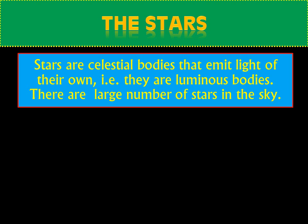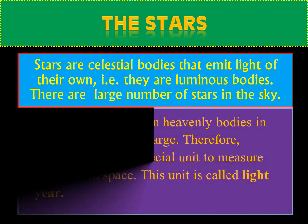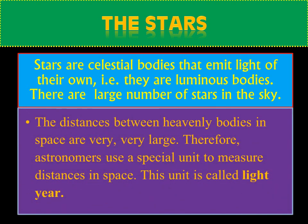We can see a large number of stars in the night sky — that means it is countless. What about the distance of these stars from the Earth? The distances between heavenly bodies in space are very, very large. Therefore, astronomers use a special unit to measure distances in space. This unit is called the light year.